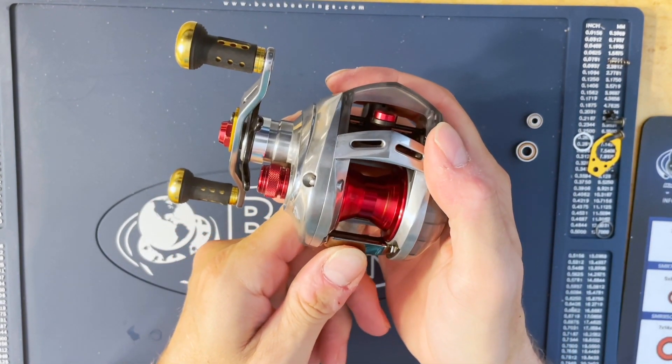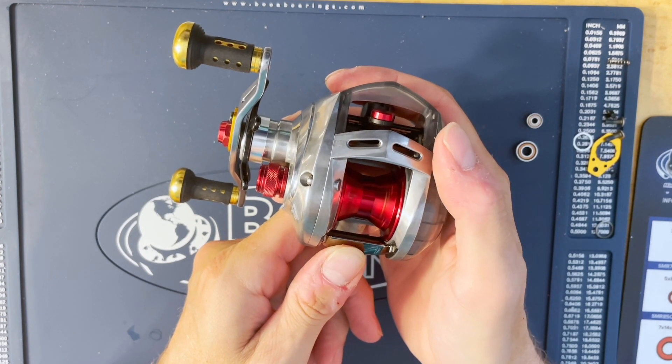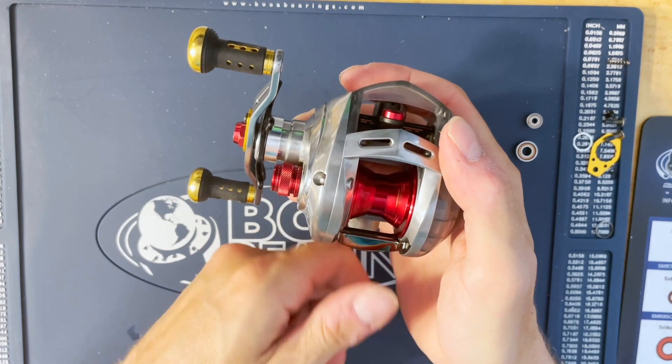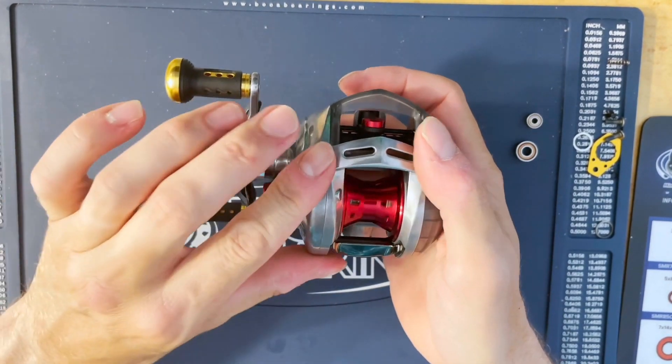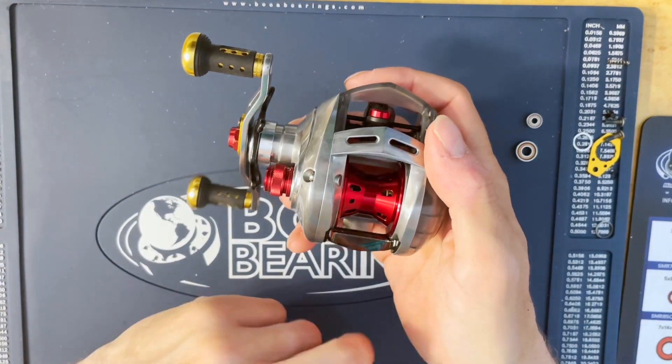And that is the Boca bearing install on a Daiwa Elphys Ito. One incredible reel, pretty tricked out. I need to polish this up a little bit more. As you can see, it's still spinning.